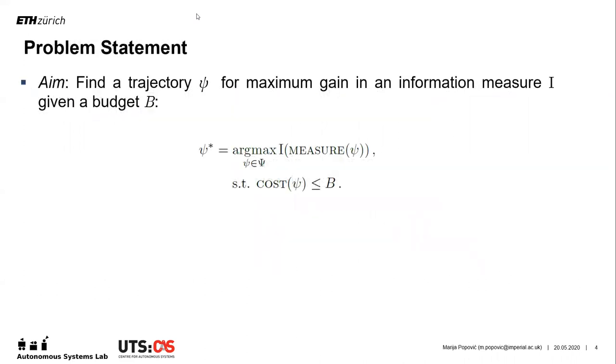In general, the active mapping problem seeks to maximize an information measure given a mission budget constraint, such as on time or energy. Here, the function measure obtains a set of sensor measurements along a trajectory from which information value can be calculated according to the utility function i. In our work, we propose a new utility function that jointly considers field mapping and robot localization in GP-based scenarios.